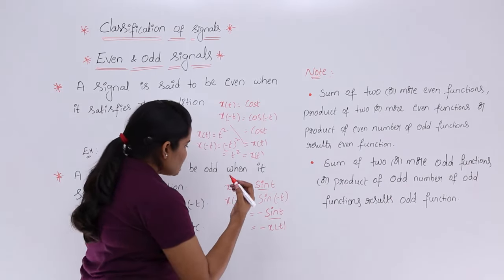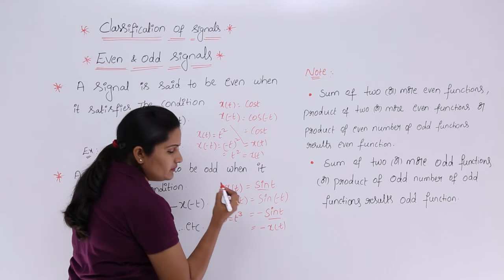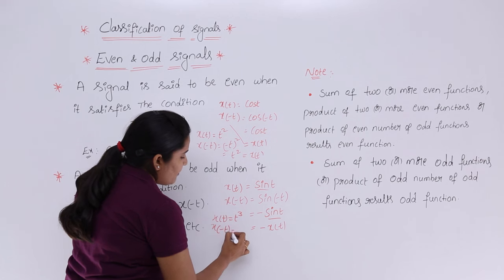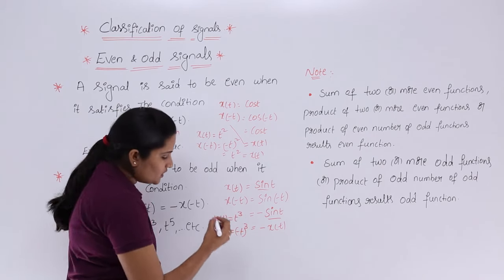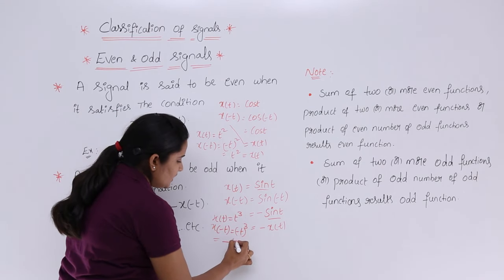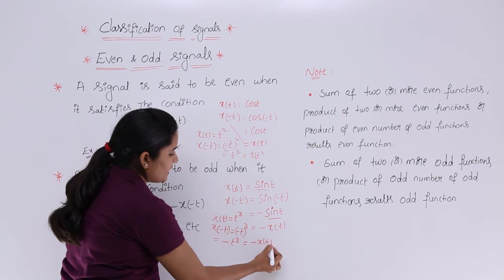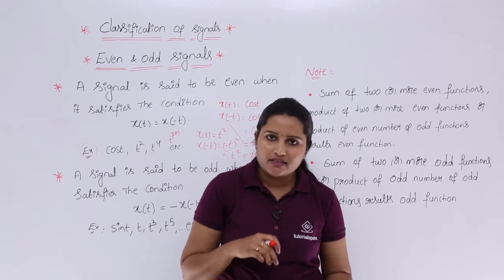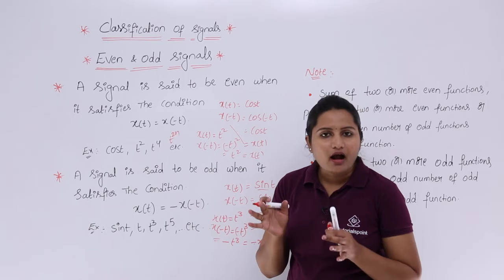For example, if x(t) = t³, and you substitute t = -t, you get (-t)³ = -t³. This is nothing but -x(t). Sending the minus to the other side gives x(t) = -x(-t). This again satisfies the condition of an odd signal, so t³ is said to be an odd signal.